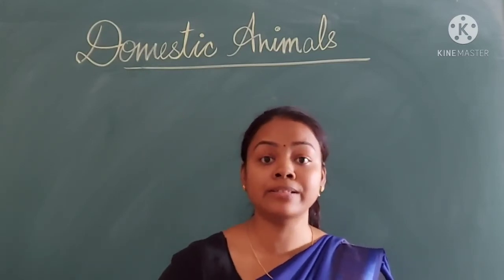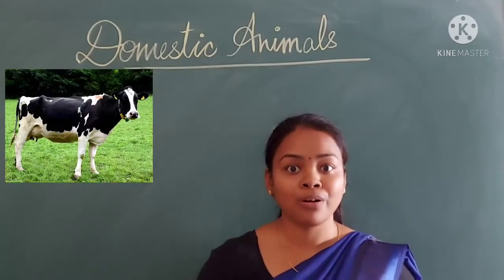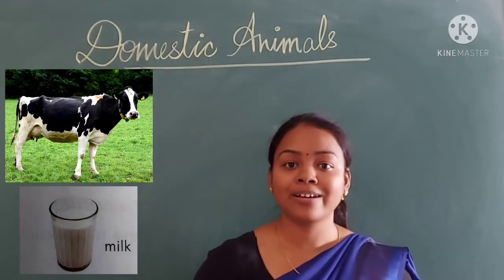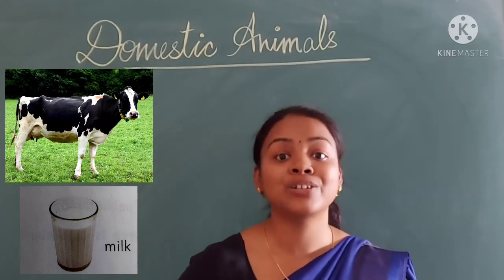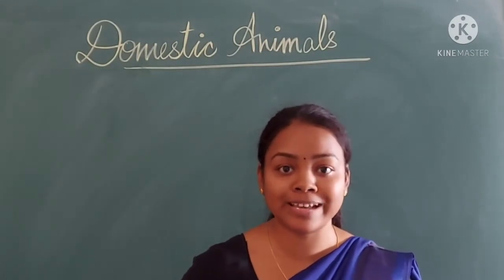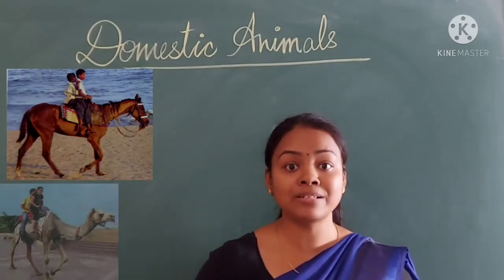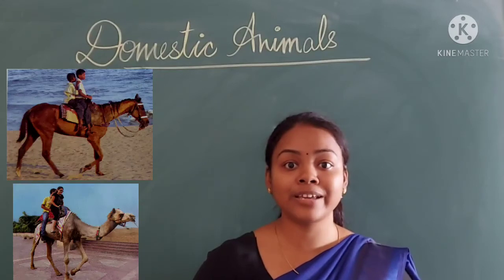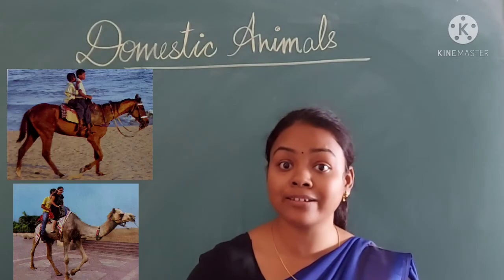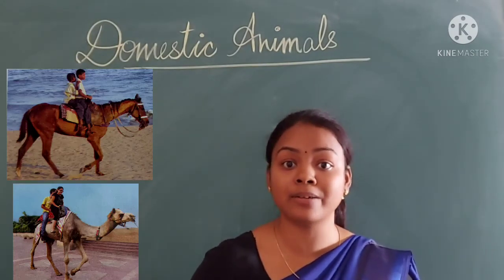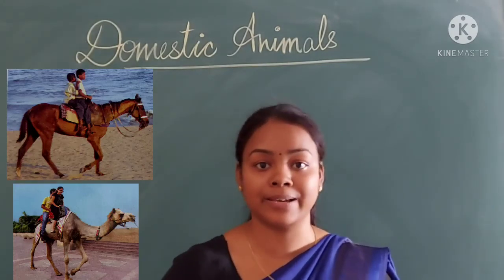For example, cow. Cow gives us milk. Gaayi hume kya deti hai? Doodh deti hai. And horses, camel — what do they give us? They give us a ride. Hume savari karvate hai. Ek jaga se doosre jaga jaane mein hume help karte hai.